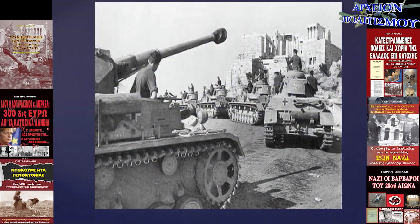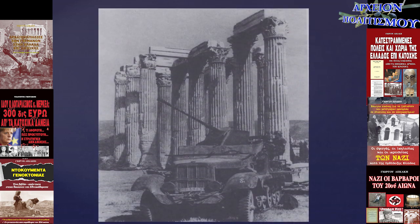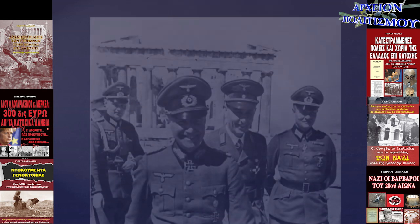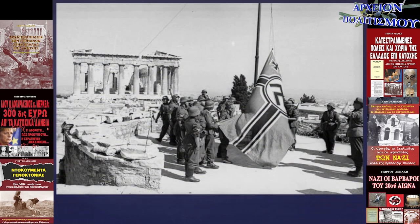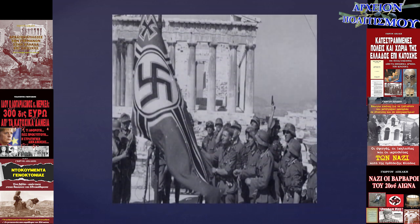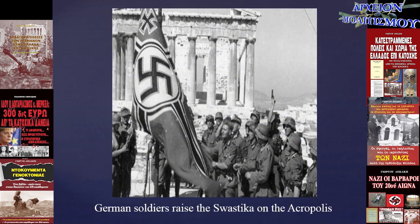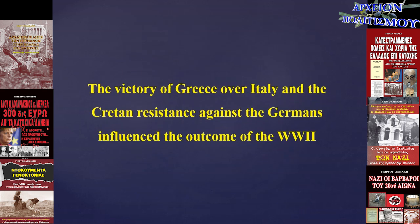The German troops could not enter Greece from Bulgaria because of the Metaxas line, so they entered through Yugoslavia. They reached Athens on April 20, 1941, and raised the swastika on the Acropolis. Crete resisted till June. Historians suggest that the victory of Greece over Italy and the Cretan resistance against the Germans influenced the outcome of the war, because it delayed the attack on the Soviet Union — the Russian winter found the Germans outside the gates of Moscow, and they lost the Battle of Moscow.